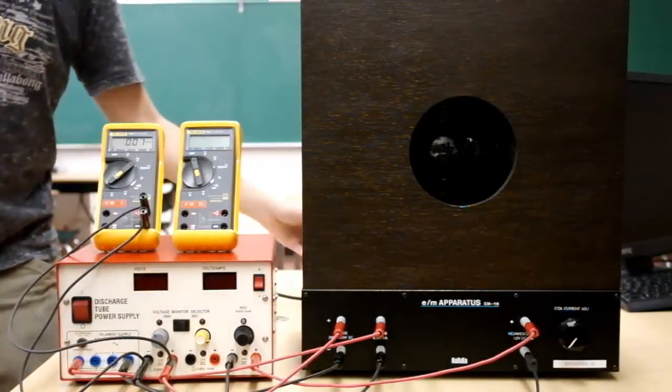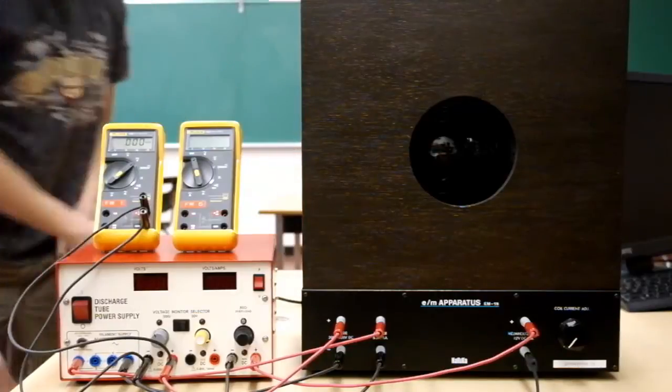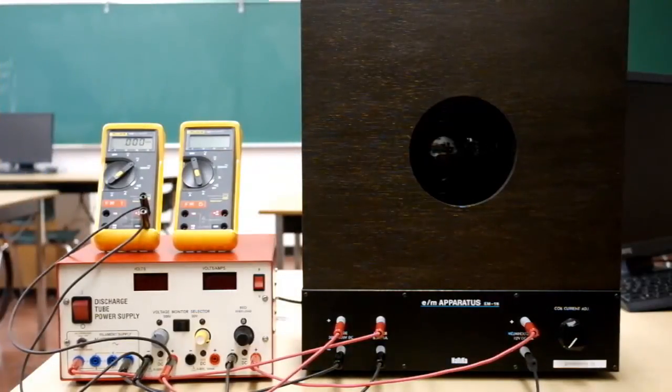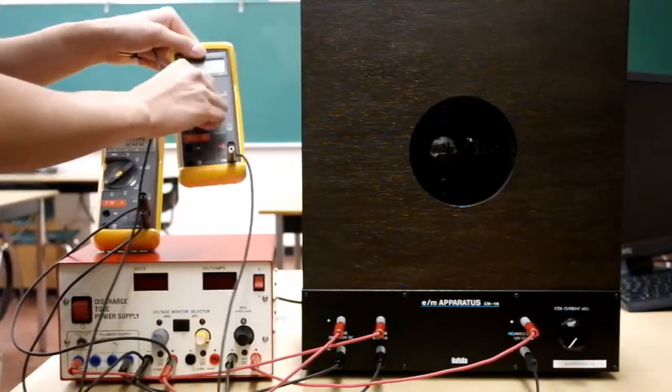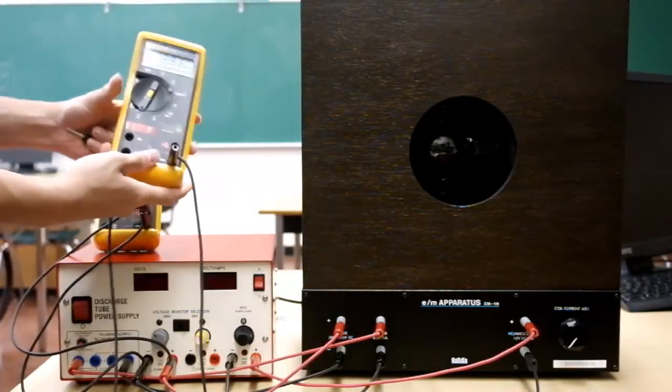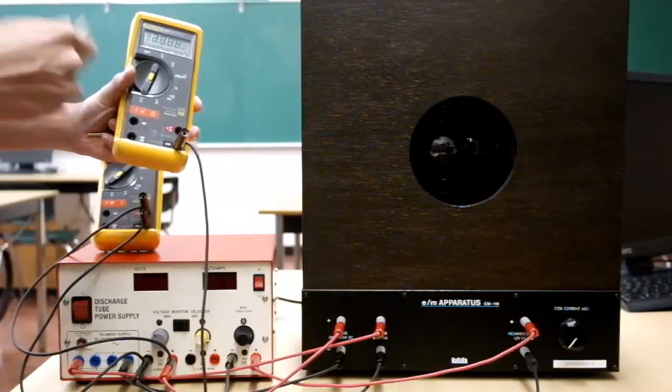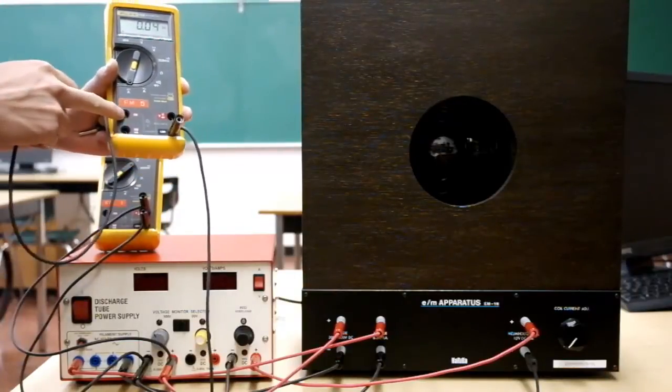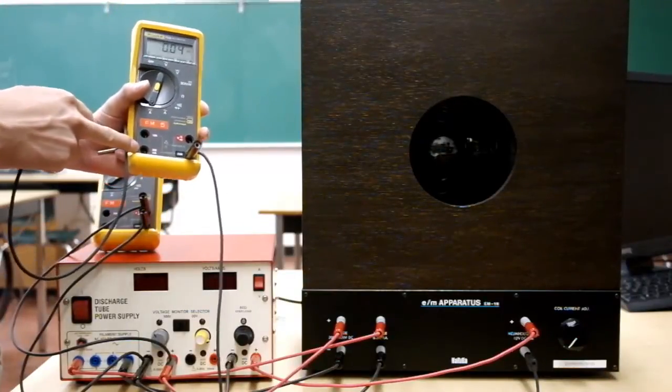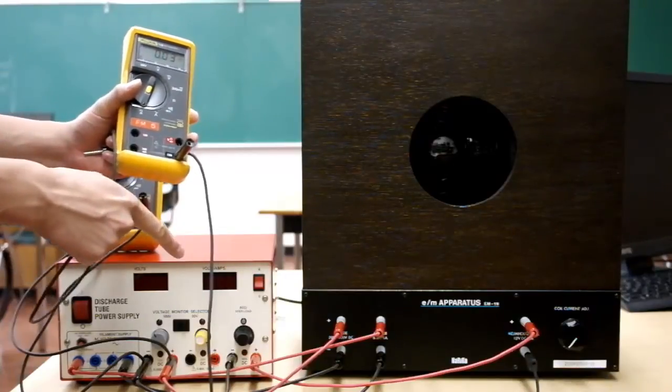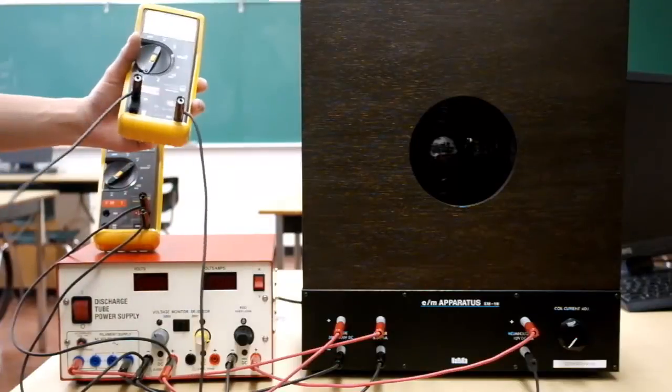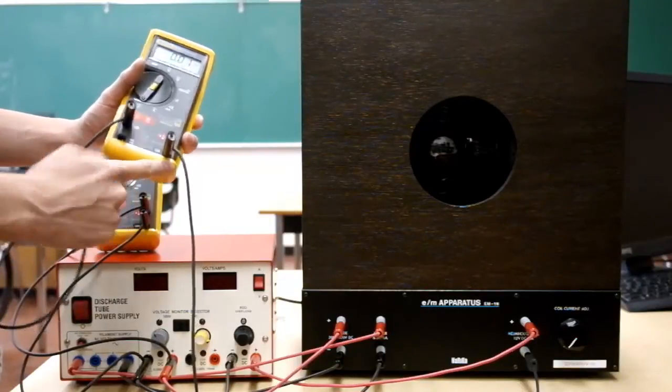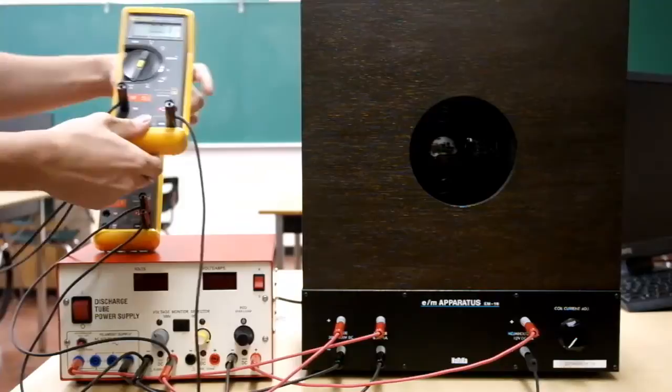Then the more important one is the current. For the ammeter, you of course once again use common. Switch it over to DC amps. The important thing here, you want to use the 10 amp scale, not the 300 milliamps, because we're expecting currents up to 2 amps. If we have as high as 2 amps going through this one, we'll blow the fuse and then we'll have to replace something. And that's not fun.